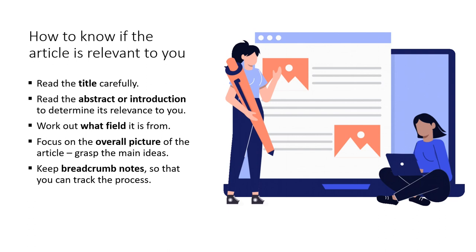You can also work out what field the article is from. Sometimes a particular topic might be written about from different fields — an example of this is things in Earth and Environmental Science. So working out which field it fits into might give you a little bit of an understanding as to whether it fits into your world or not. Then focus on the overall picture of the article, try and grasp the main ideas, and from there move on to whether the article is actually relevant to you. Keep breadcrumb notes as you go along that you can follow the trail of, so if you have interpreted something, leave yourself notes that you can rely on later.